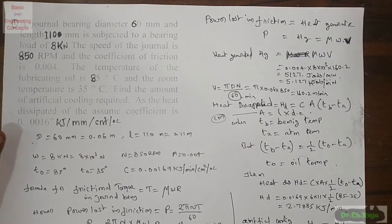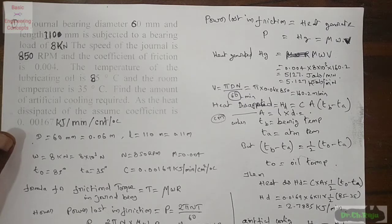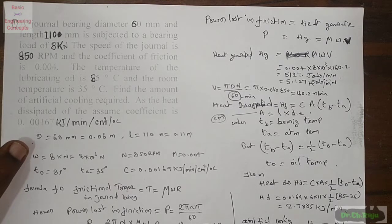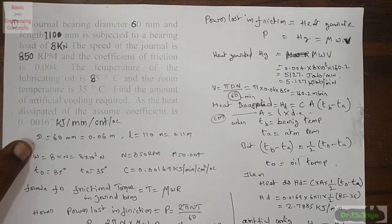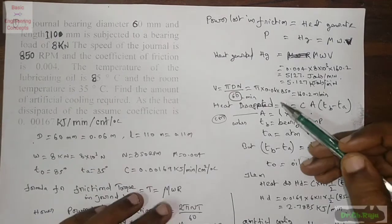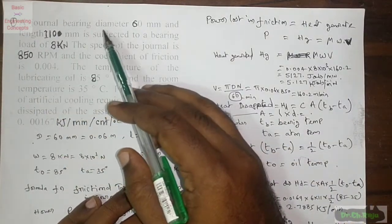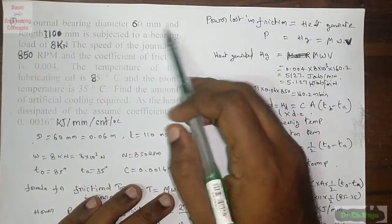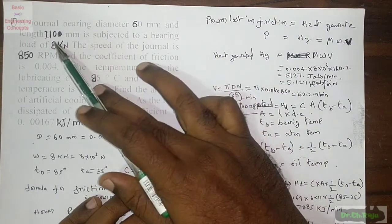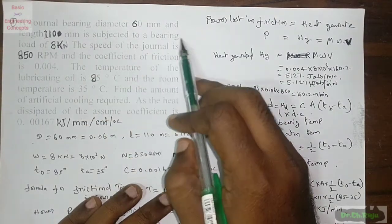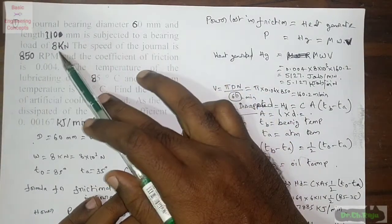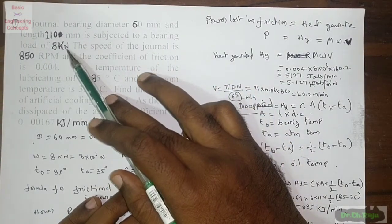In this session I want to explain simple problems on the design of journal bearings. The problem: a journal bearing with diameter 60 mm and length 110 mm is subjected to a bearing load of 8 kilo newtons.